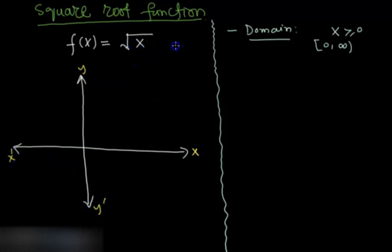So you can see that if x value is 0, then y will be 0. If x value is 1, then y will be 1. If x is 4, then y will be 2. If x is 9, then y will be 3.